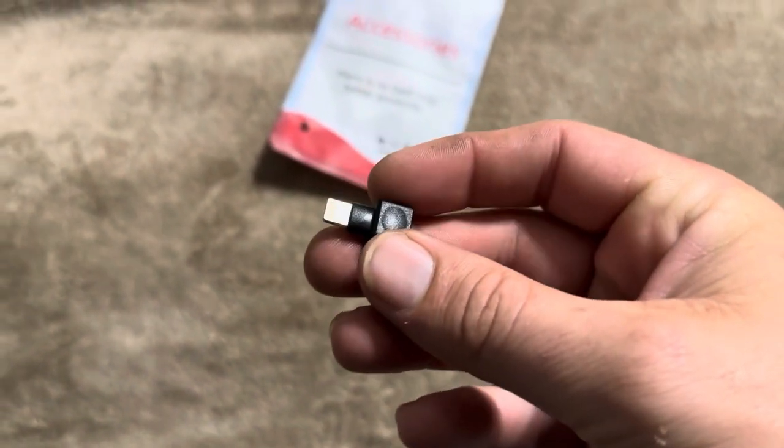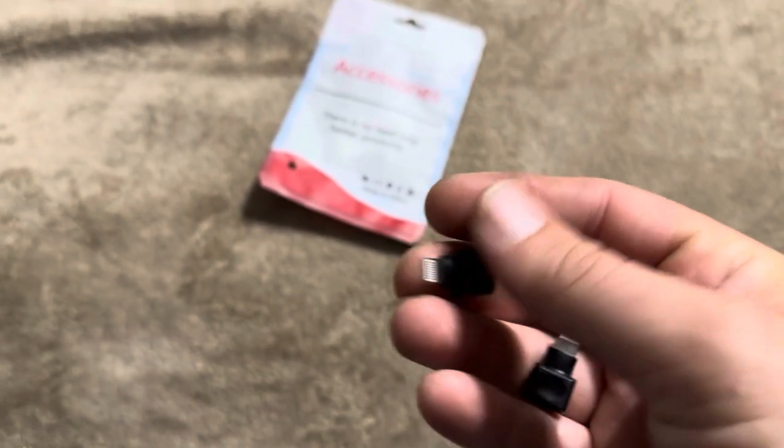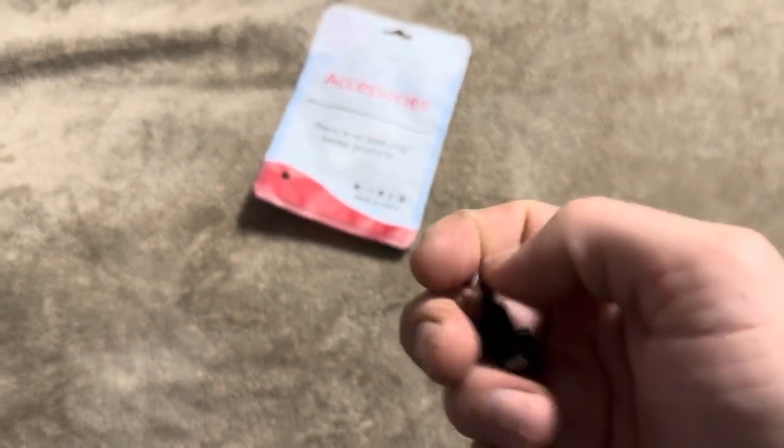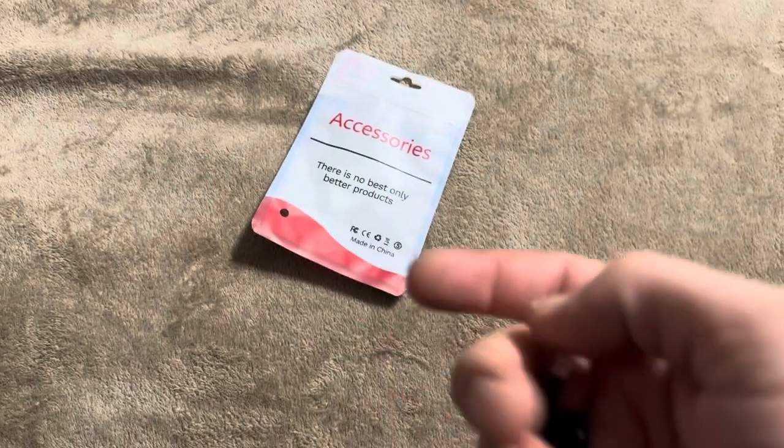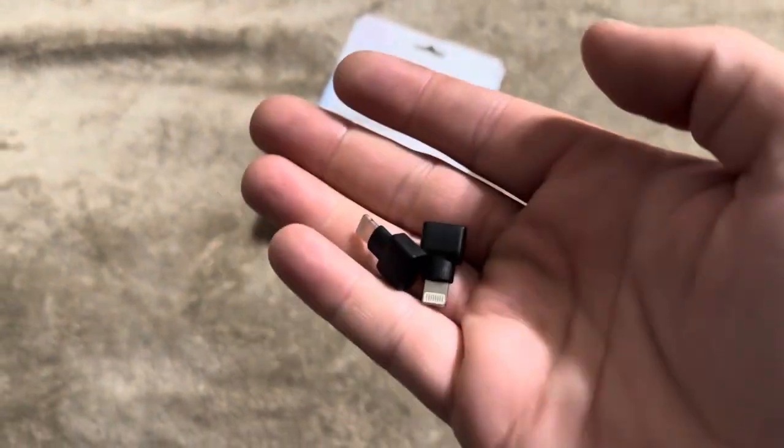Now these aren't going to extend a long way out of the cell phone, but they will allow you to get past the case. I have an Otterbox-style case which is designed to protect the edges. It does have a decent size bumper on it, which I obviously want to protect my iPhone, so that's why I purchased these.